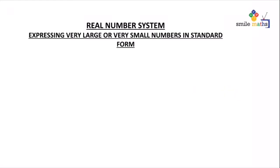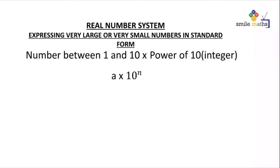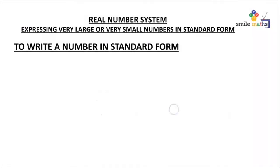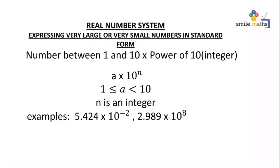Welcome to today's video on the real number system. This time we are looking at expressing very large or very small numbers in standard form. Standard form refers to a number between 1 and 10 multiplied by a power of 10, written as a × 10^n, where a is from 1 to 9 and n is an integer. This means n can be positive or negative. For example, 5.424 — since 5 is between 1 and 9, this is valid.